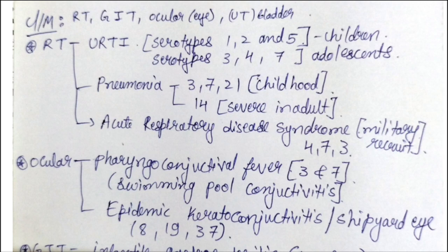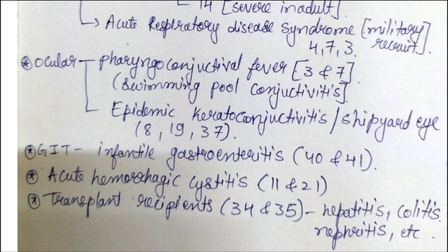In ocular manifestations, adenovirus causes pharyngoconjunctival fever (serotypes 3 and 7), also known as swimming pool conjunctivitis — acquired by direct contact in contaminated swimming pools. Swimming pools should be chlorinated and sanitized. Epidemic keratoconjunctivitis, known as shipyard eye, is caused by serotypes 8, 19, and 37.